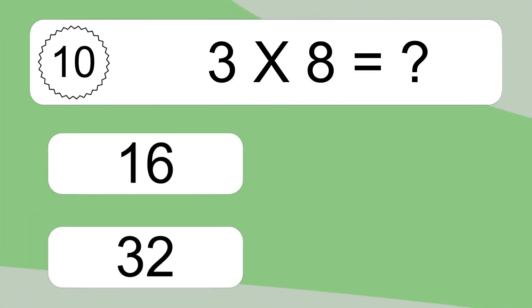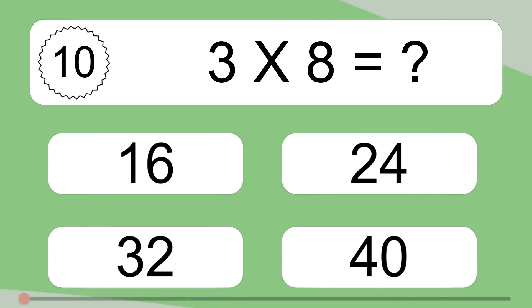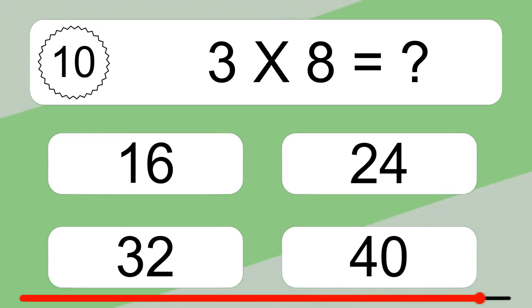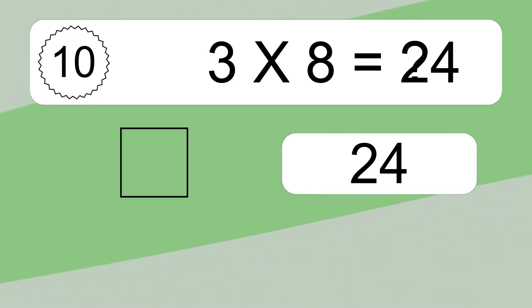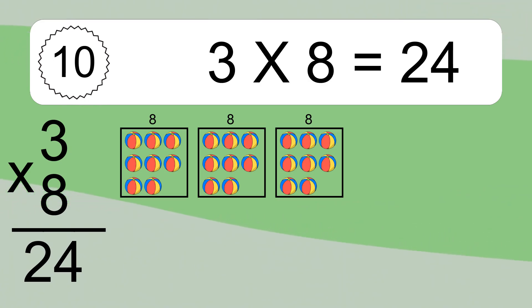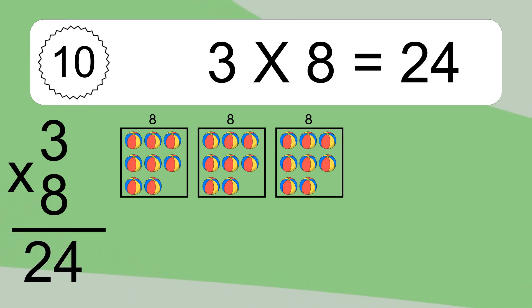3 times 8 equals what? 3 times 8 equals 24. We have 3 boxes, and each box has 8 colorful balls inside. If you count all the balls in all the boxes together, you will have 3 times 8 balls. This equals 24 balls.